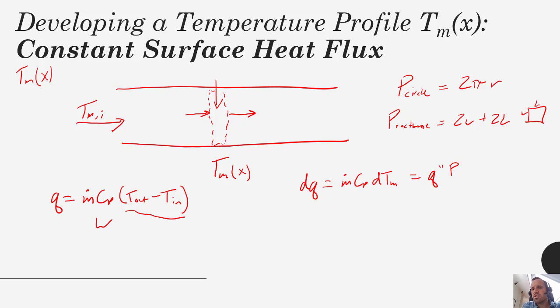If this were w and this were l, it's just the distance going around. The heat added is the flux times the perimeter, and then we would need to multiply that by the width of this little control volume, which we're going to call dx.